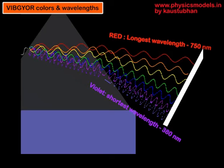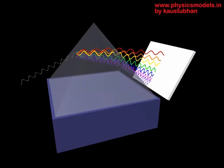And please note the wavelengths, the red wavelengths are really the longest, 750 nanometers, and the violet the shortest at 380 nanometers.